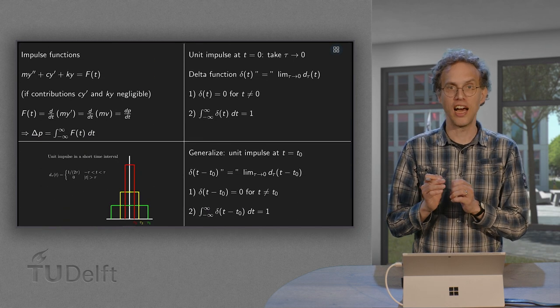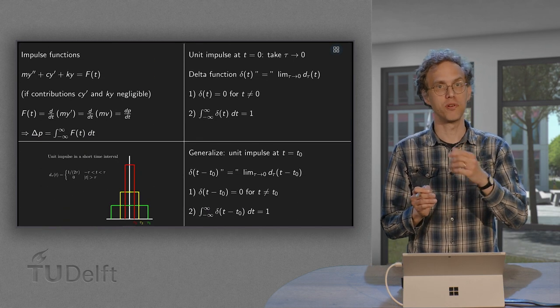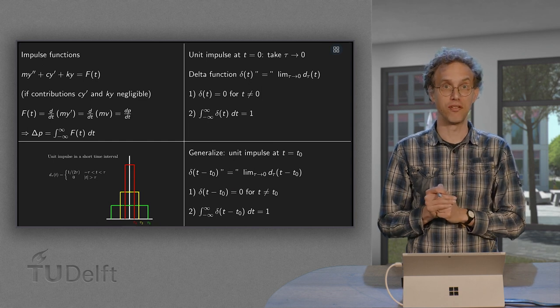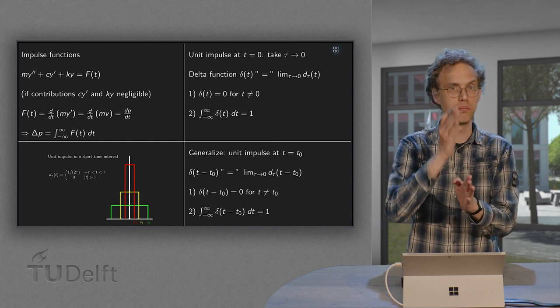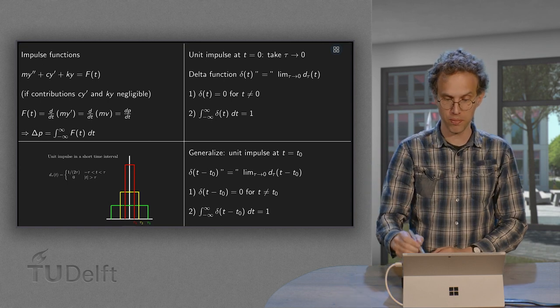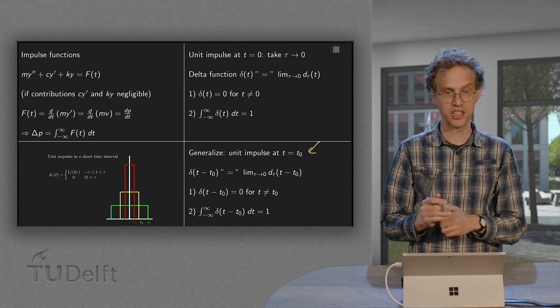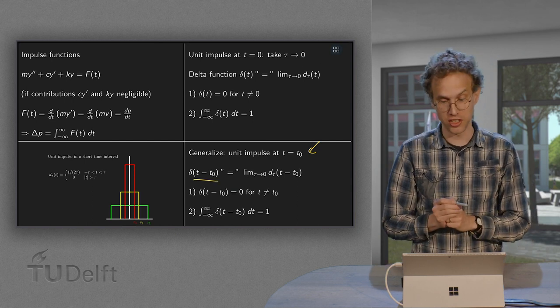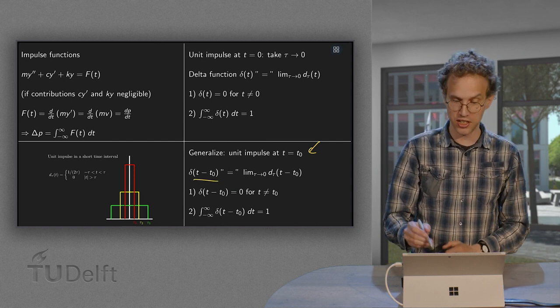We can do it slightly more general. So impulse, unit impulse at t equals zero is δ(t). Now if we do not want to put the impulse at t equals zero but, for example, at t equals t₀, so what do we do in that case? Then we use our delta at t minus t₀. We do exactly the same.